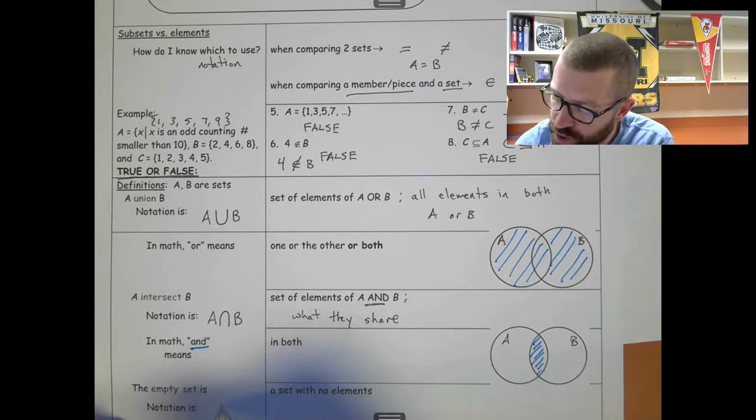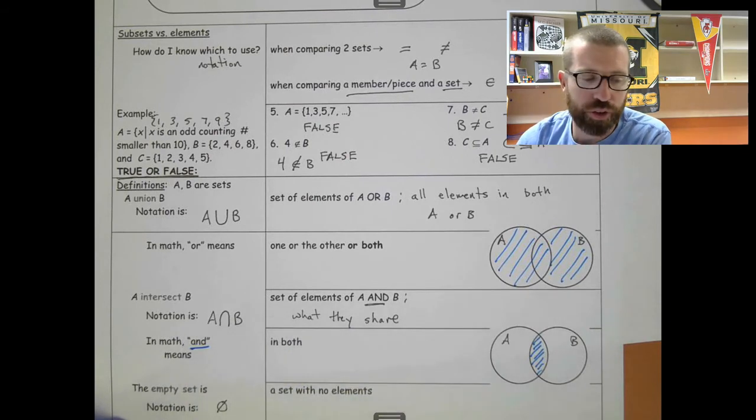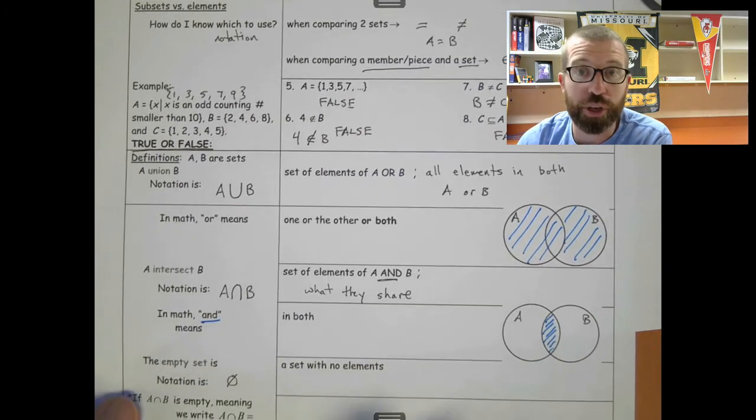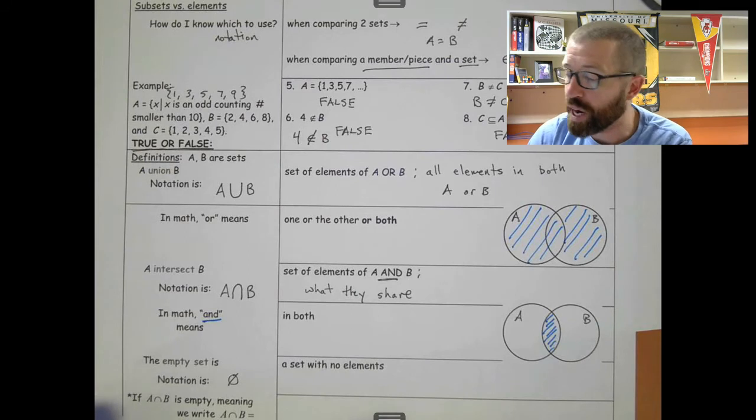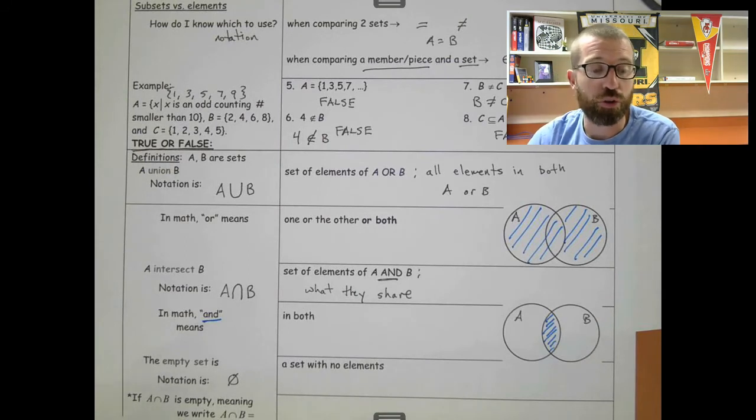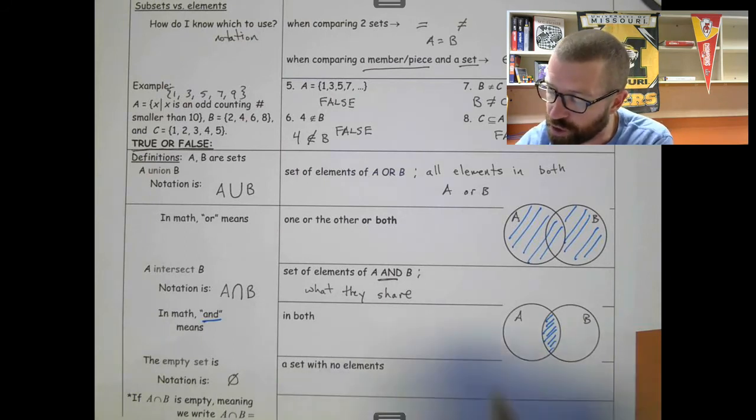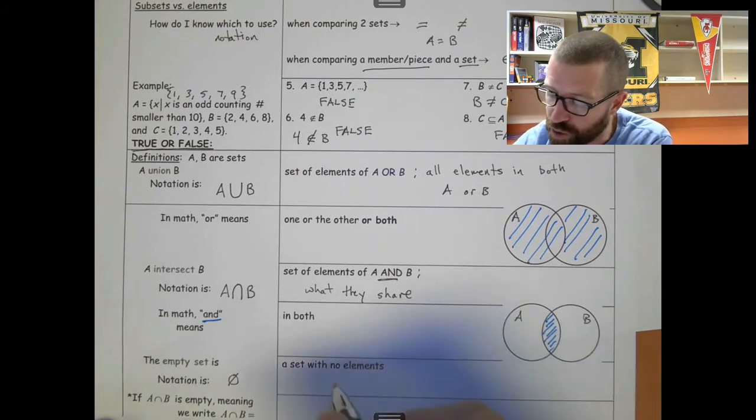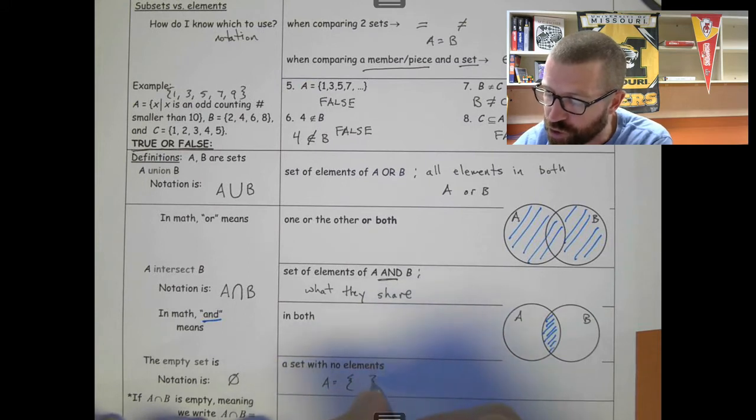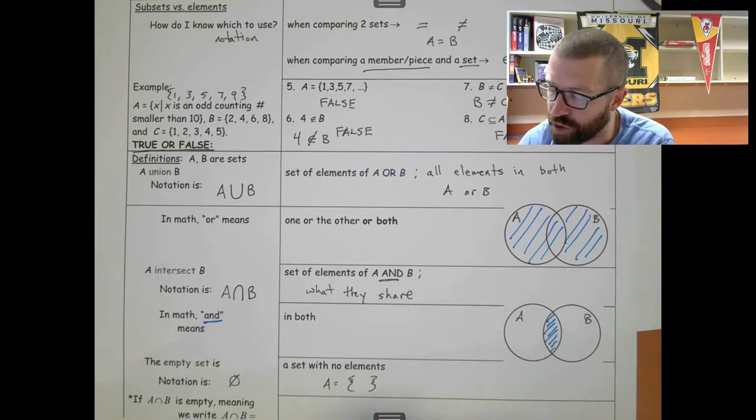An empty set. We use this notation, the circle with a line through it. You probably have seen it before, or might have seen it before, with using no solution. It means there's no solutions in the set. That's why we use that. And it's a set with no elements. So it's not zero. It's nothing, which is confusing. But it's just the empty set. There's nothing in there.